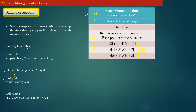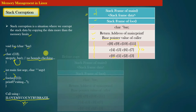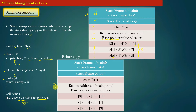Now suppose you invoke this function and pass the following string as a command-line argument. This string has 20 characters, so its size is 20 bytes. What you are doing is copying 20 bytes of string into a 12-byte buffer without checking whether the buffer is large enough to hold the string. This is the snapshot of the stack memory before the copy.